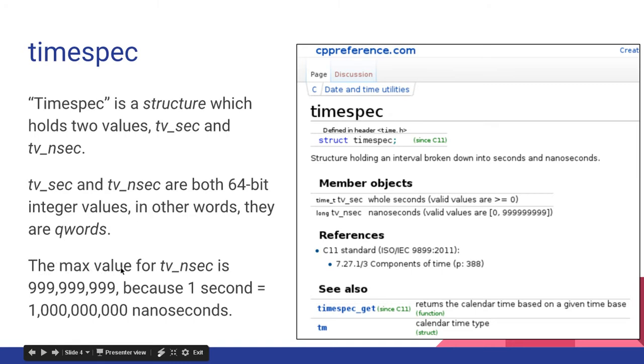The max value for tvnsec is 999,909,000, because one second equals one billion nanoseconds.